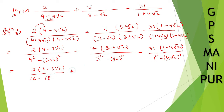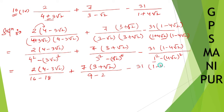For the second fraction: 3 squared is 9, and root 2 squared cancels the root to give 2. So 9 minus 2 equals 7. For the third fraction: 1 squared is 1, and 4 root 2 squared gives 4 squared times 2 equals 16 times 2 equals 32. So the denominator is 1 minus 32.